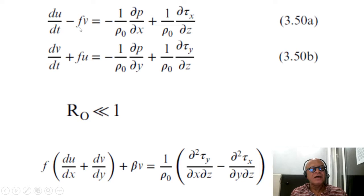So you end up with f du/dx plus f dv/dy plus beta v, where when you differentiate this with respect to y, you're going to get df/dy, which is beta times v. That's the meridional gradient of the Coriolis effect, the beta effect, which we already mentioned in the context of, for example, the western boundary intensification in the ocean.